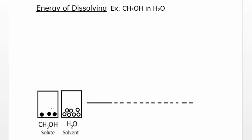What are the energetics of dissolving? Let's do an example of methanol in water, and we'll do a little energy diagram to show what happens as the dissolving process occurs. We'll start with a separate container of methanol and water. Methanol is the solute. We're calling water the solvent. And we have to do a couple things to get them together.